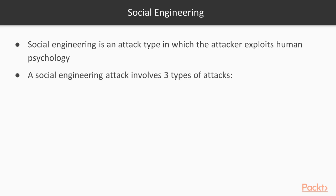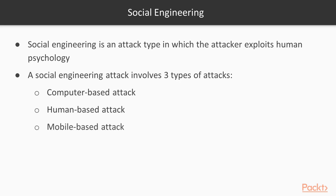Now, what are the types of social engineering? There are mainly three types: first is computer-based attack, second is human-based attack, and third is mobile-based attack. In a computer-based attack, the attacker tries to create fake login web pages, which is called a phishing attack. In a human-based attack they try to manipulate. In a mobile-based attack they try to install some malicious apps inside the victim's mobile phone. These three attacks are mainly categorized in social engineering.